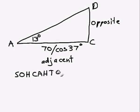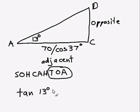So we write out SOHCAHTOA again, we have our adjacent and opposite side, so we want to use TAN. So TAN of 13 degrees, or TAN of any angle, is always the opposite side TOA divided by the adjacent side.